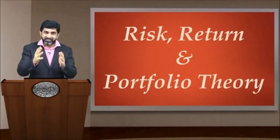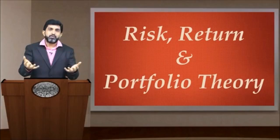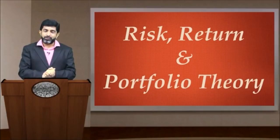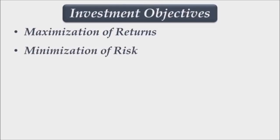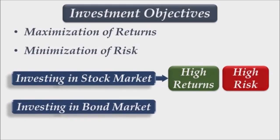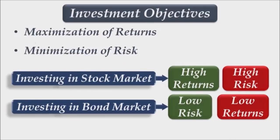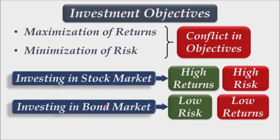In this title — Risk, Return and Portfolio Theory — risk and returns are the objectives of our investor, and portfolio is the means through which this objective will be achieved. To recap: investment objectives are maximization of returns and minimization of risk. Investing in stock market gives high returns but high risk; investing in bond market gives low risk but low returns. Both objectives are not being achieved simultaneously — one is compromised — so we have conflicts in objectives.